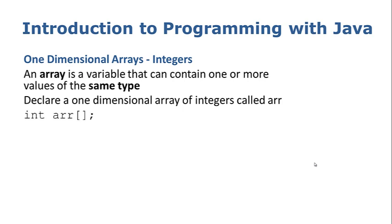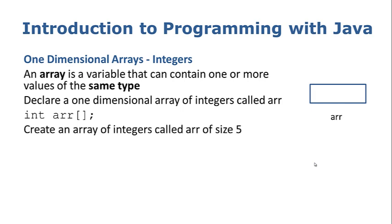To declare a one-dimensional array of integers it looks like we are just declaring a regular integer variable. We use the keyword int and then the name of our variable, which in this case is R. But to denote that it is an array we put two square brackets after it — just an open and closed square bracket and then a semicolon. That tells Java that this is not just a regular variable but it is an array, so it is going to hold more than one integer value. We get our box labelled R, and it is a longer box because there is going to be space for more than one piece of information.